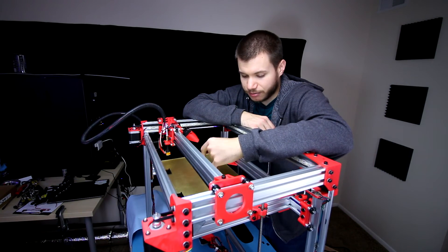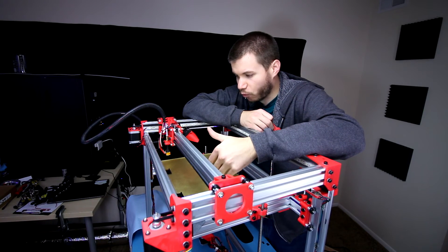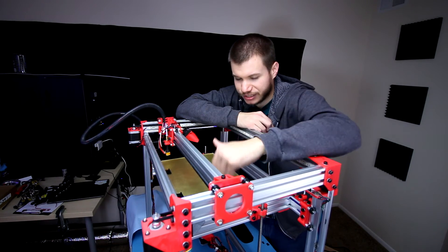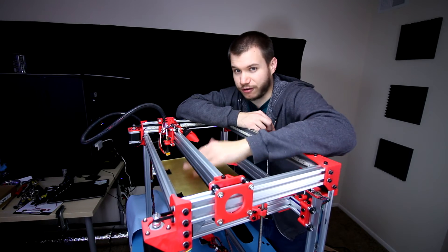Before you even try to pry it off, you want to let the bed cool down. Don't try to pull it off as soon as the print is finished when the bed is super hot. What you'll do is warp the piece. Wait until the bed cools down to where you can at least touch it without burning yourself. Once you're able to do that you can go ahead and pry it off.